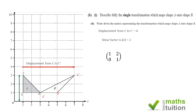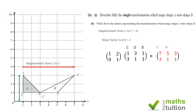The transformation matrix for this shear is [[1, 2], [0, 1]]. Applying this to C, D, and E: the y-values stay the same after transformation, but the x-values change. Checking: 1×1 + 2×3 = 7 ✓; 1×3 + 2×1 = 5 ✓; 1×1 + 2×1 = 3 ✓. This gives C'=(7,3), D'=(5,1), E'=(3,1), matching shape B.